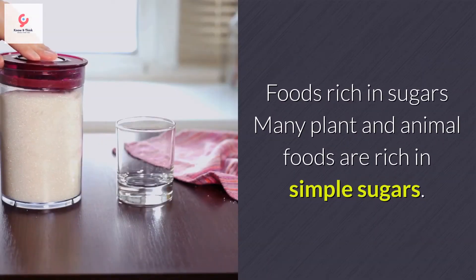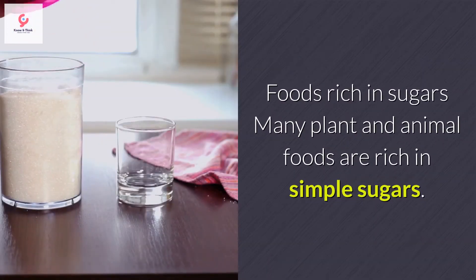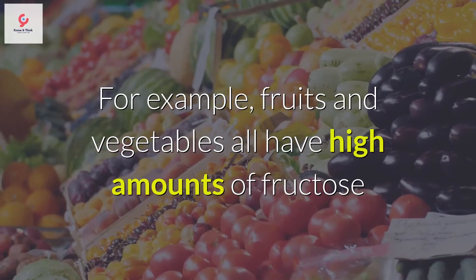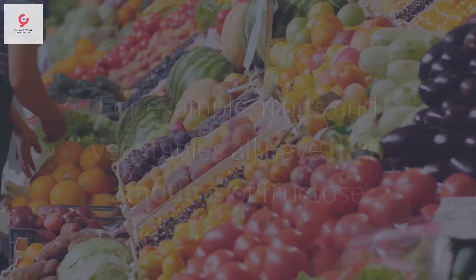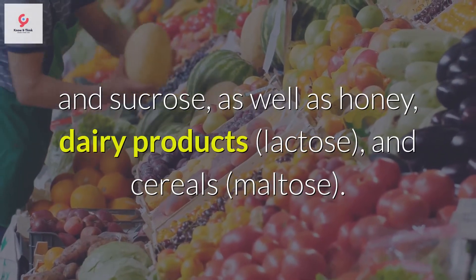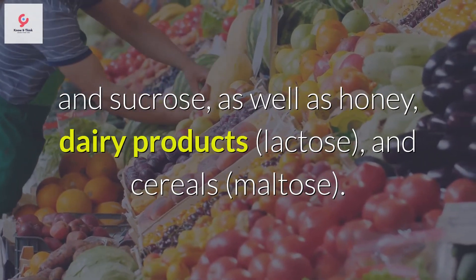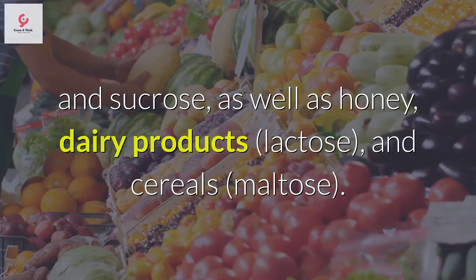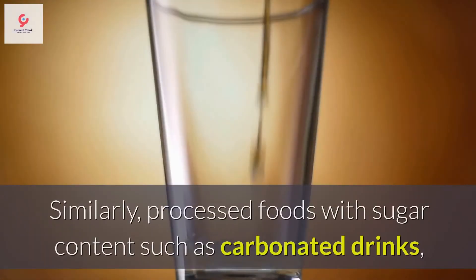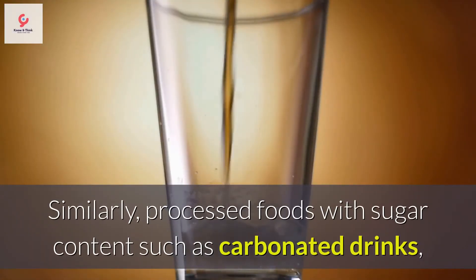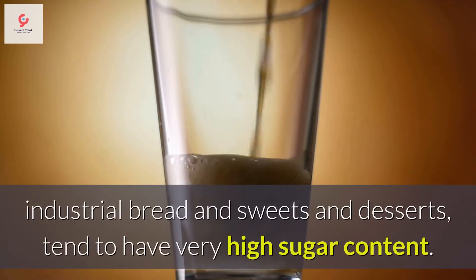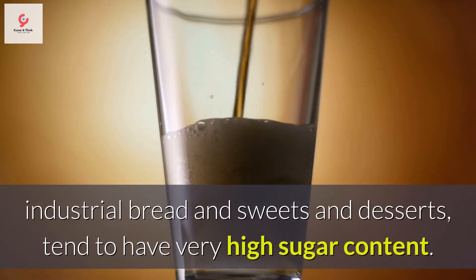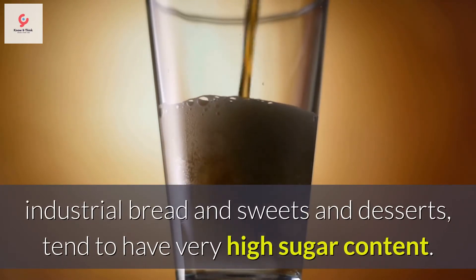Foods rich in sugars: Many plant and animal foods are rich in simple sugars. For example, fruits and vegetables all have high amounts of fructose and sucrose, as well as honey, dairy products (lactose), and cereals. Similarly, processed foods with sugar content such as carbonated drinks, industrial bread, and sweets and desserts tend to have very high sugar content.